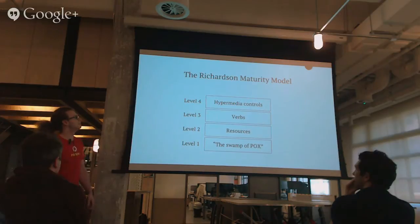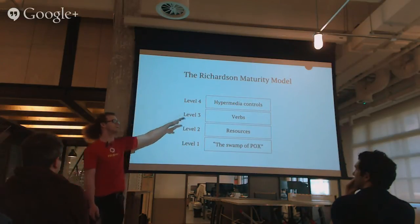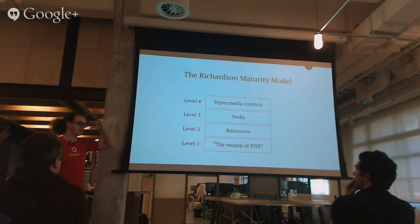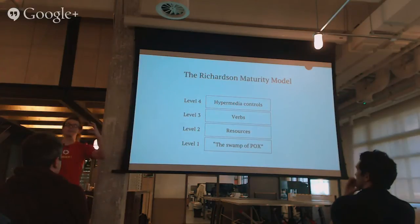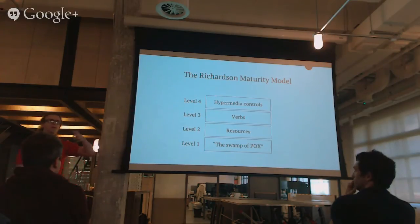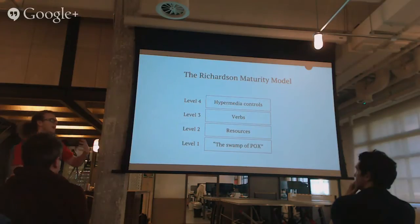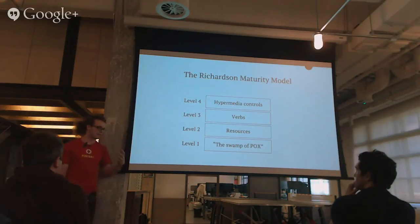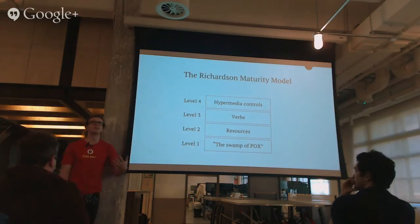Some of you might be familiar with this thing — it's called the Richardson Maturity Model. It talks specifically about RESTful APIs, and how semantically advanced your API is.